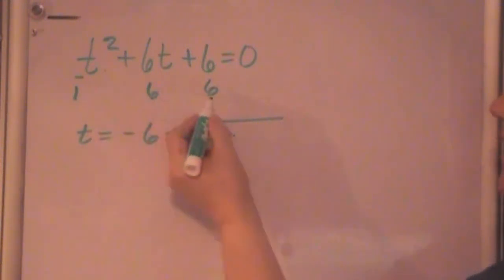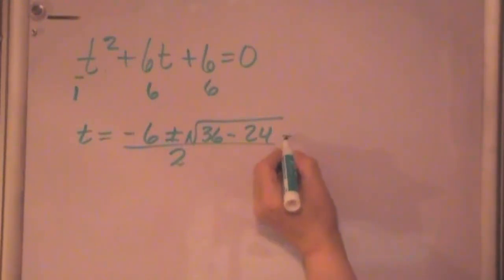So 4 times 1 is 4, times 6 is 24, all over 2 times a, and a is 1, so this is just 2.